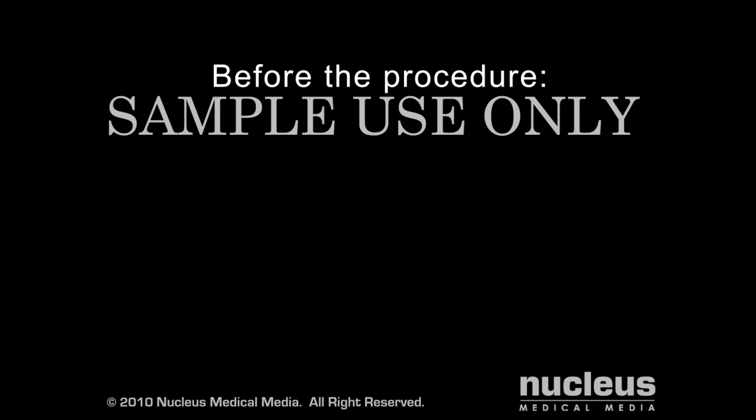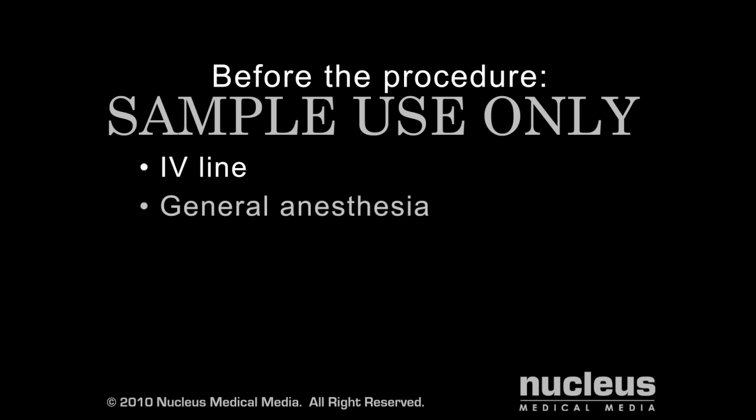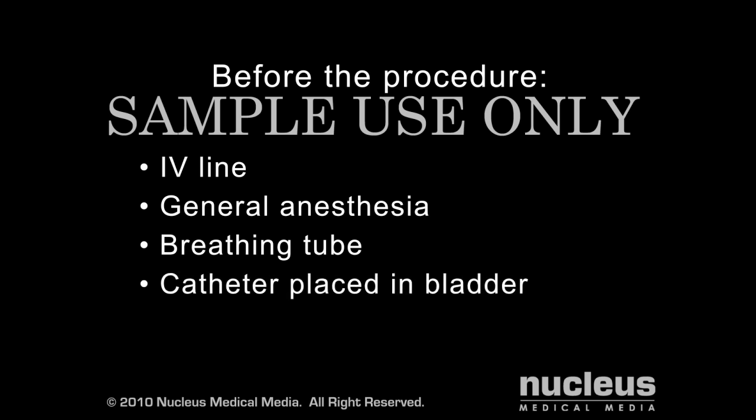Before the open procedure, an IV line will be started to provide you with fluids, antibiotics, and anesthesia. A traditional open surgical repair is performed under general anesthesia, which means you will be asleep for the duration of the procedure. A breathing tube will be inserted through your mouth and into your windpipe to help you breathe during the operation. A catheter will also be inserted into your bladder to drain your urine and monitor your kidney function.